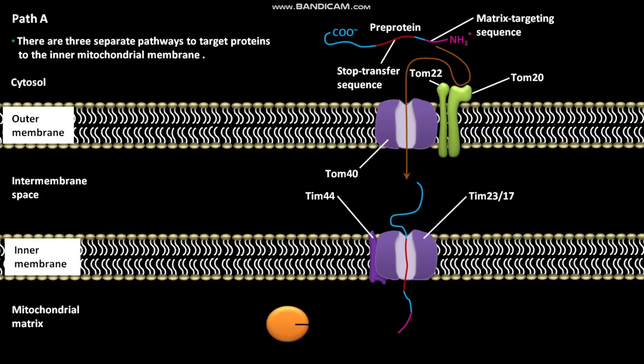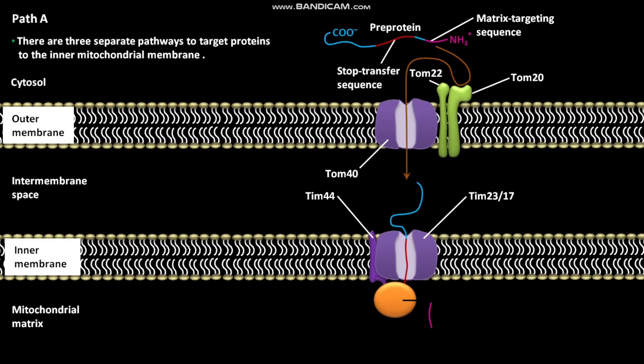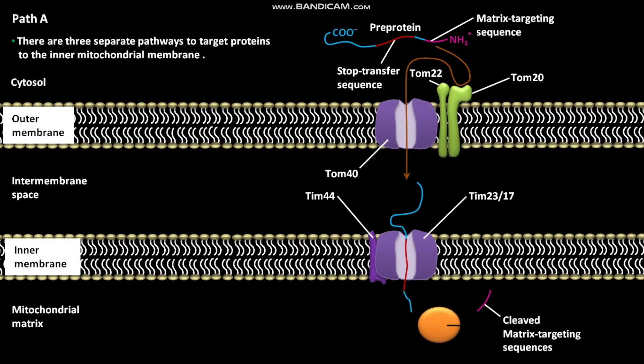As a result, the matrix targeting sequence is exposed into the mitochondrial matrix. The HSC70 present in the mitochondrial matrix then binds to the pre-protein and cleaves the matrix targeting sequence. As a result, a cleaved matrix targeting sequence and a membrane-anchored intermediate protein is formed. The membrane-anchored intermediate protein is then transferred laterally into the bilayer of the inner membrane, as type 1 integral membrane proteins are incorporated into the ER membrane.